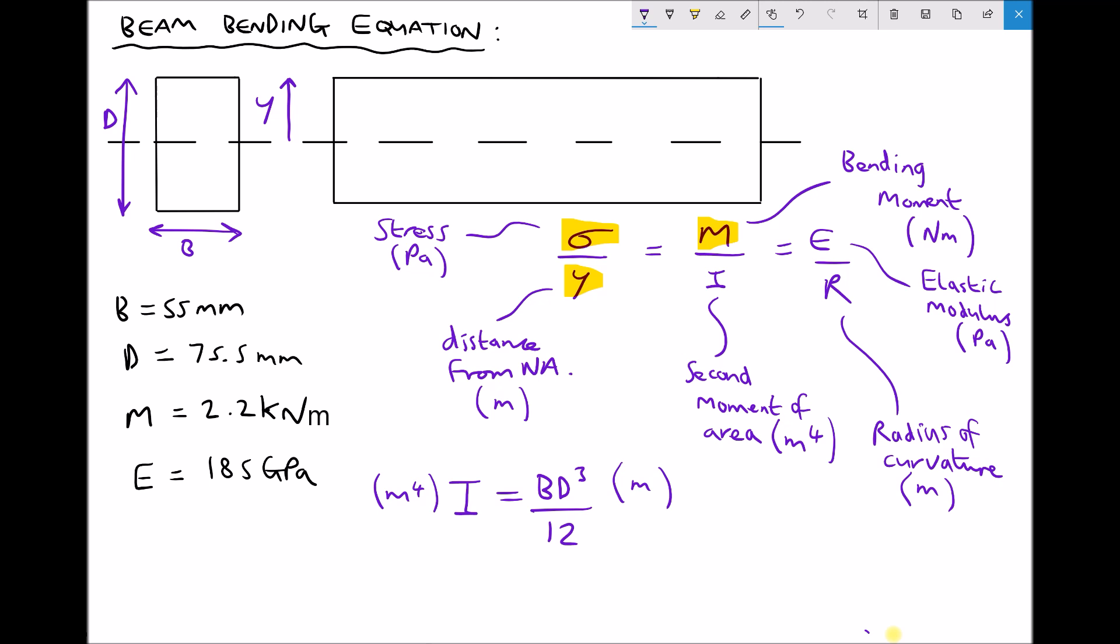I can give you a visualisation of this. If you take a ruler and you try to bend it across its narrow section like so, then you'll find that the ruler is very easy to bend. But if you turn the ruler around the opposite way, then although the cross section is the same, you'll find that the ruler is much more difficult to bend in this orientation. So it's important to get B and D the right way round.